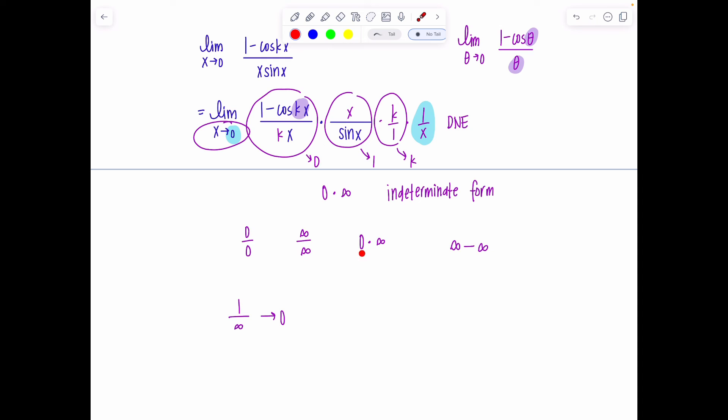It does not mean it doesn't exist. It means you need to do something else before you can determine that limit. Same thing for these. Infinity/infinity. Zero times infinity is not zero. It means something's shrinking and something's blowing up and it's not clear which one's running the show. It changes depending on the problem. And same thing here with infinity minus infinity. They don't just cancel out. The indeterminate form means it cannot be determined when it is in this form.